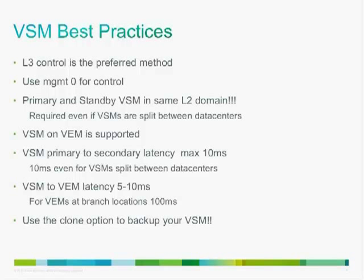VSM best practices: use the L3 control method and use your management interface as the control interface. Keep primary and standby VSMs in the same Layer 2 domain — even in split data center deployments, HA between VSMs is always Layer 2. VSM on the VEM is supported. Latency between primary and secondary VSMs should be 10 milliseconds. VSM-to-VEM latency should be 5 to 10 milliseconds locally, or up to 100 milliseconds for branch office VEMs. Always back up your VSMs using the clone option, which takes about two minutes. If you hit a problem, just power off the failed VSM and power on the clone.